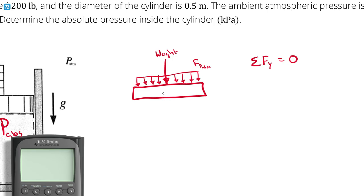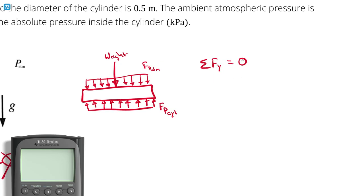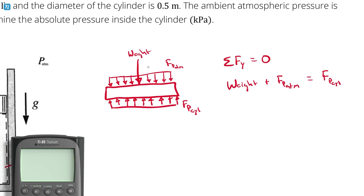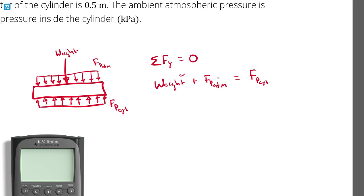I also have some force pushing down from the atmospheric pressure — the force of the atmospheric pressure. And then the piston is held up by the force of the pressure inside the cylinder. So if the sum of the forces in the y-direction equals zero, the weight pushing down plus the force from atmospheric pressure equals the force from the pressure inside the cylinder.